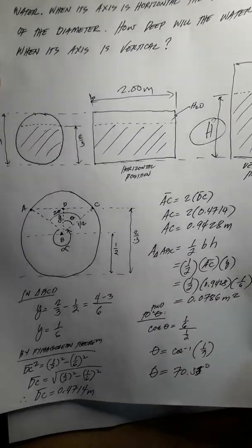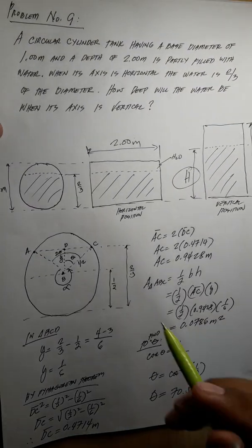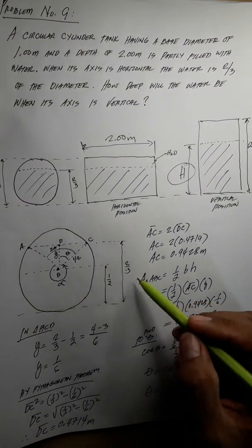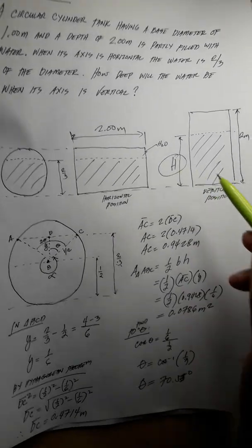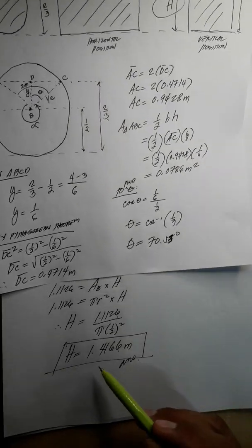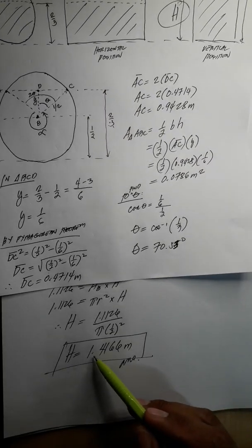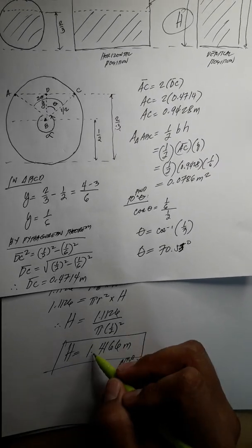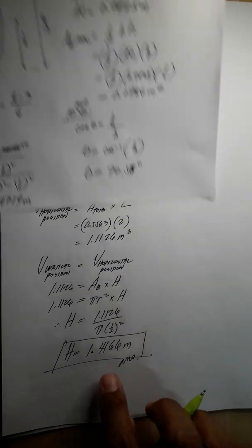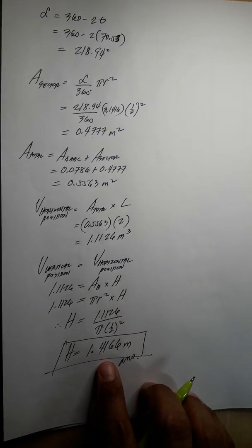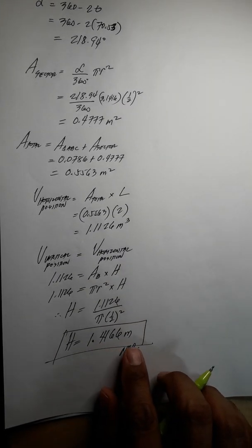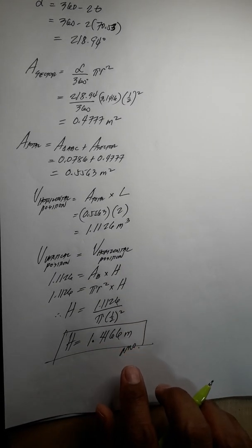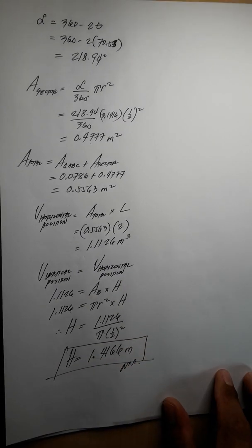In summary: in horizontal position, the height of water is two-thirds of the diameter. In vertical position, the height of water will be equal to 1.4166 meters.